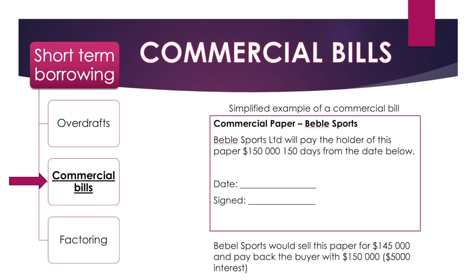Here's what a commercial bill looks like in simplified format — it's like an IOU. For example, Bevel Sports will pay the holder of this paper $150,000, 150 days from the date signed. In practice, Bevel Sports would sell this paper for $145,000 to Company X, who has surplus funds. Bevel Sports receives the $145,000 immediately. On the specified future date, Bevel Sports repays Company X $150,000 — and that extra $5,000 is the interest Company X earns.